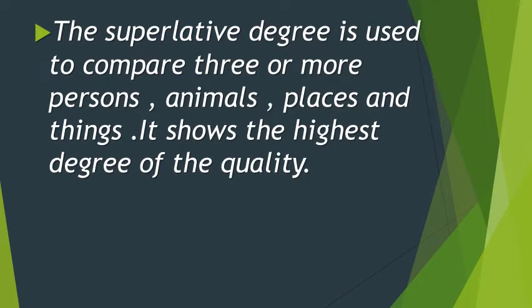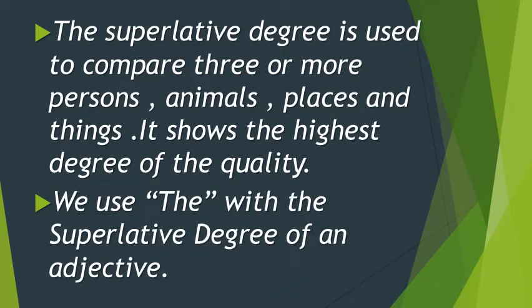Next is the superlative degree. The superlative degree is used to compare three or more persons, animals, places, and things. It shows the highest degree of the quality. In comparative degree we compare two objects, and in superlative degree we compare more than two objects. We use 'the' with the superlative degree of an adjective.